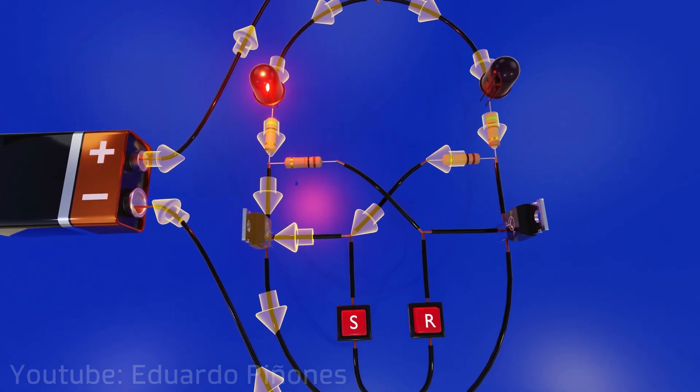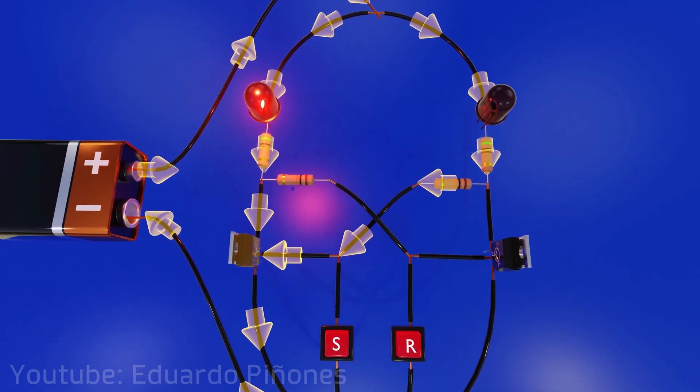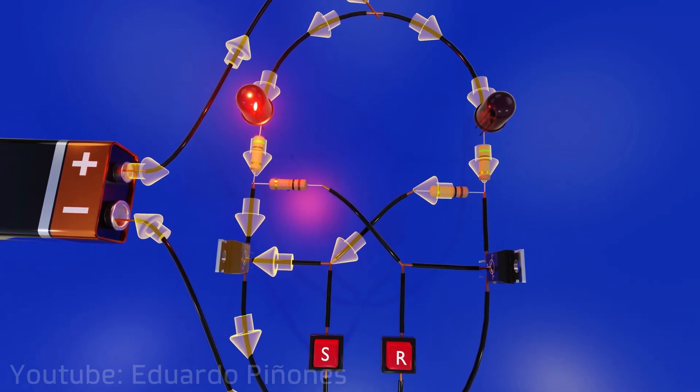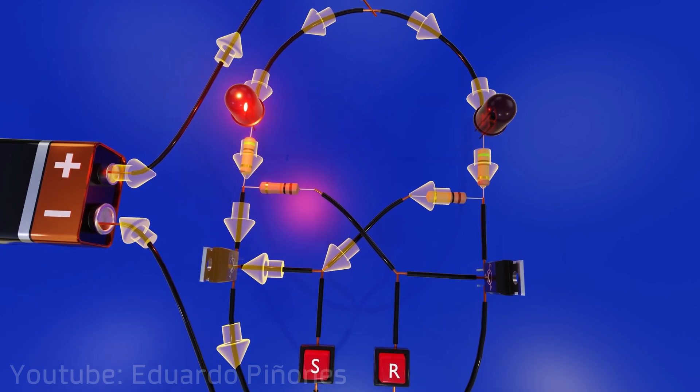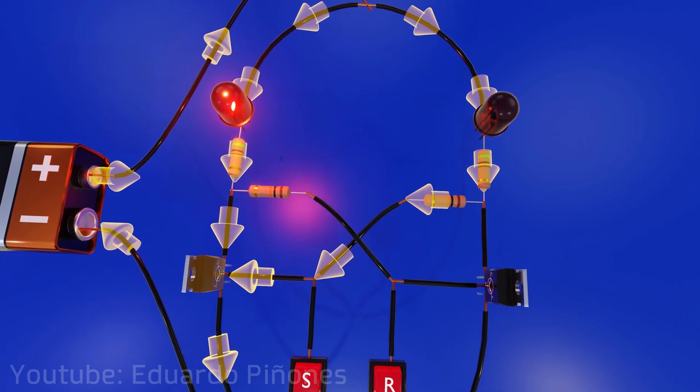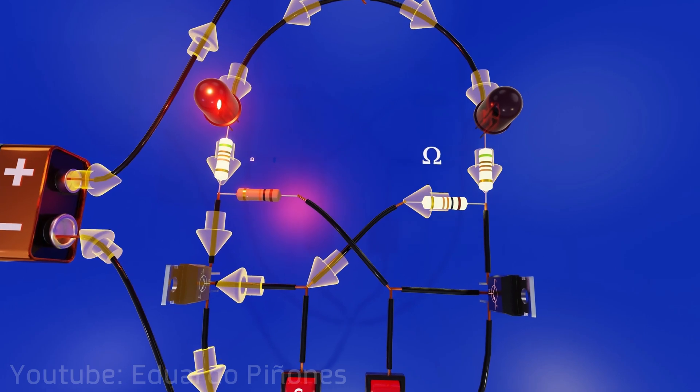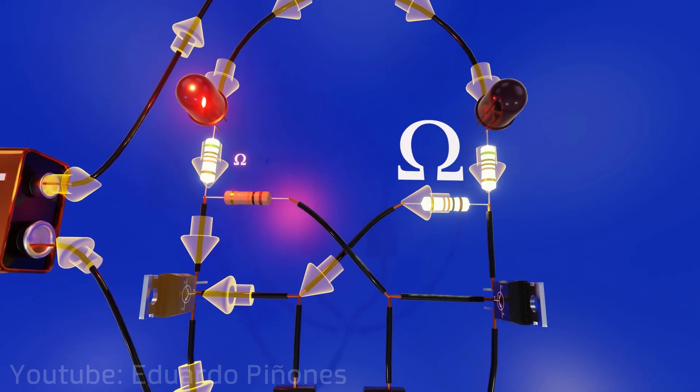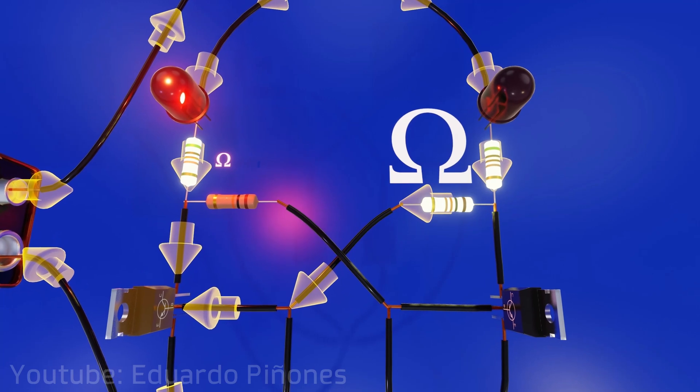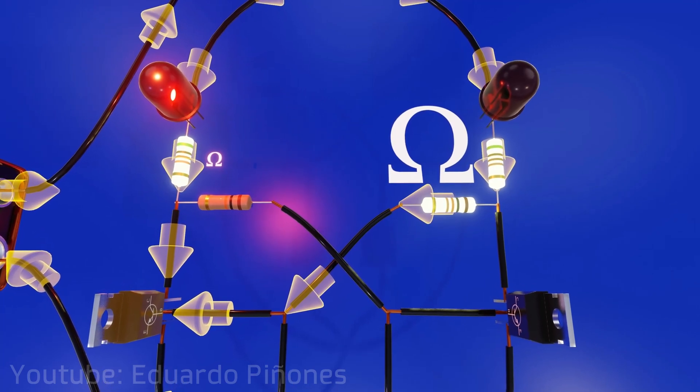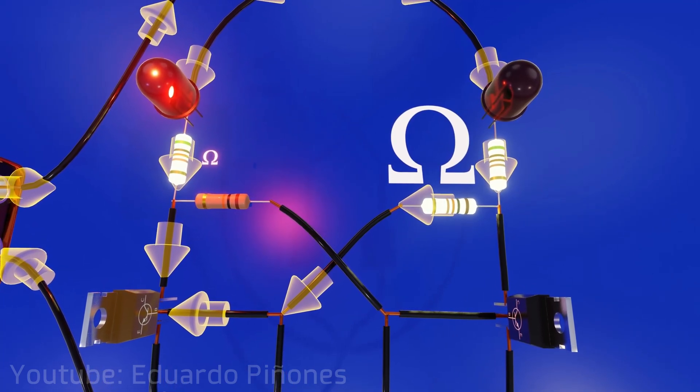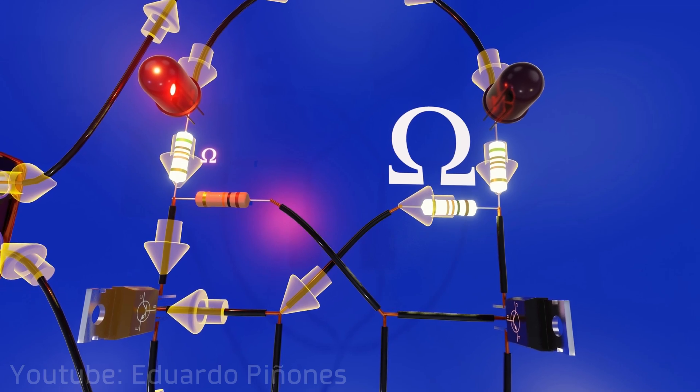At first glance it may appear that current is flowing equally through both paths and therefore both LEDs should light up. However, if we analyze each path independently, we will realize that the one that includes two resistors and reaches the base of the transistor has a much higher total resistance than the path with a single resistor that reaches the collector of the transistor, and consequently, most of the current will go through the latter.